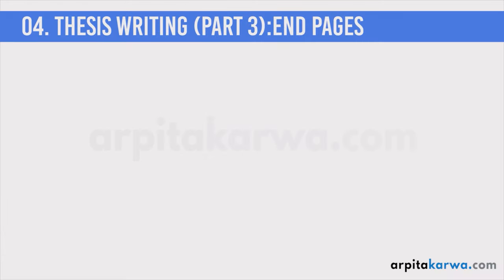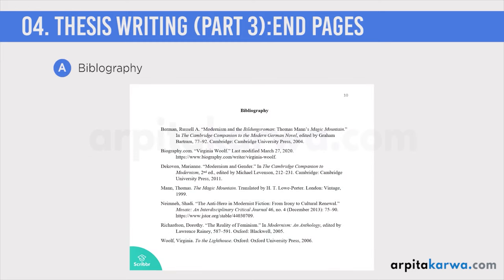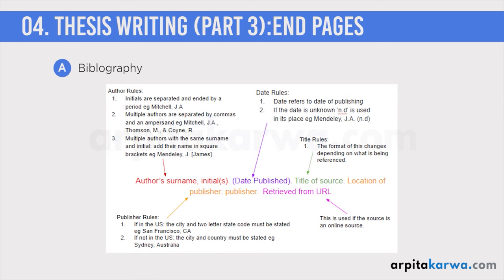Now we move to the last pages — the end matter. The first major end page is the bibliography, which is an alphabetical list of works on the research subject that you have read or consulted. You provide a list of all these works along with the names of authors and their publication houses. The specific format for writing bibliography will be discussed in the next lecture.